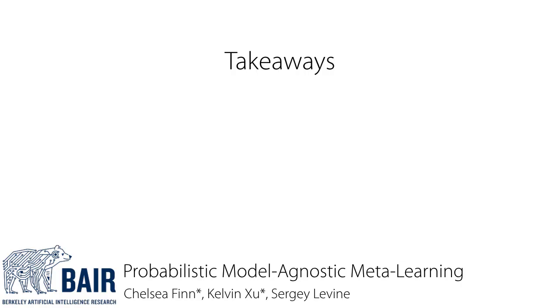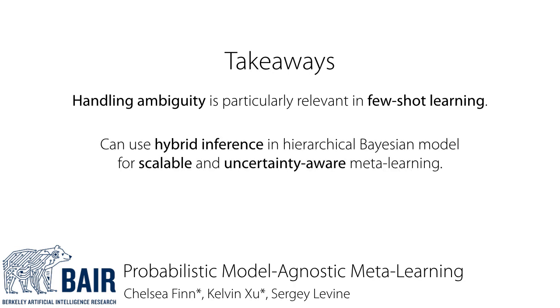The takeaways of our approach are that first, handling ambiguity is particularly relevant in few-shot learning, and second, that we can use a hybrid inference procedure in hierarchical Bayesian models for scalable uncertainty-aware meta-learning. Thank you.